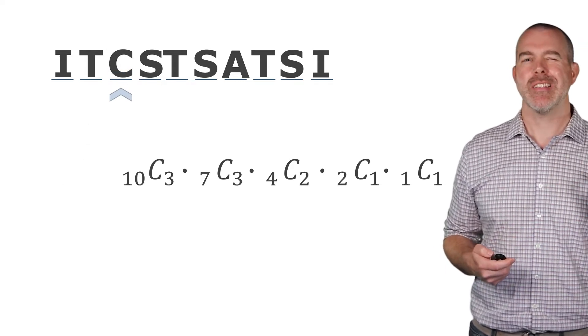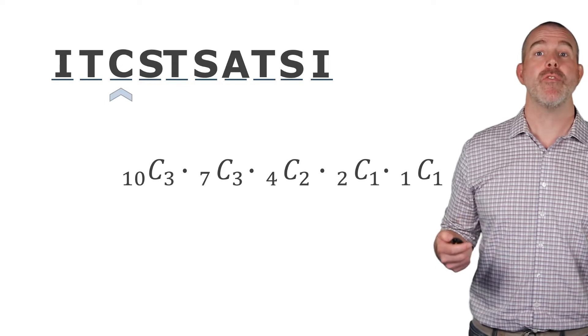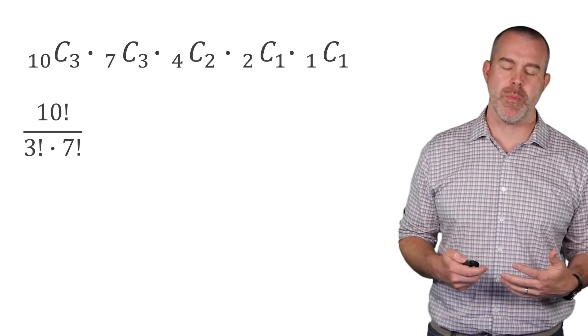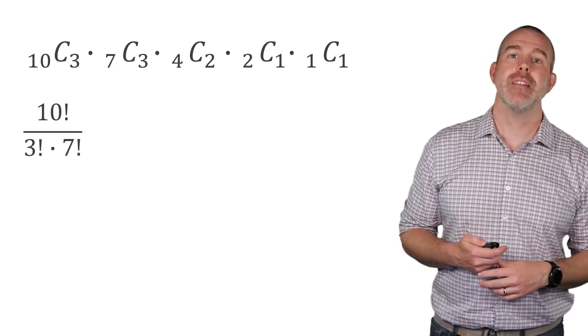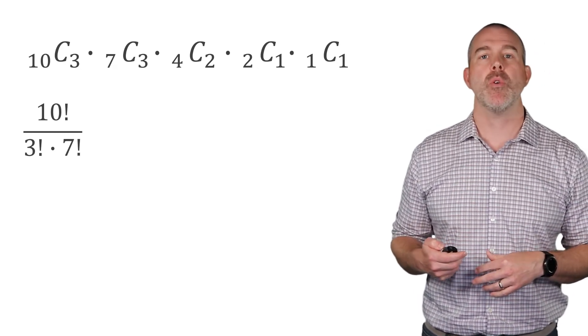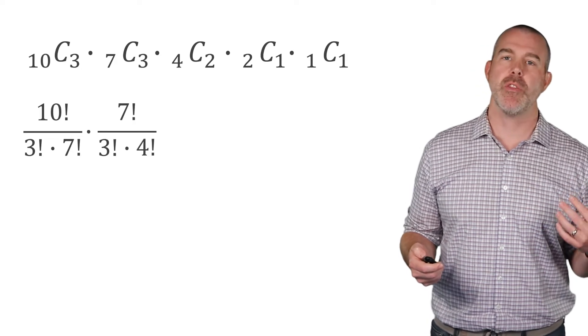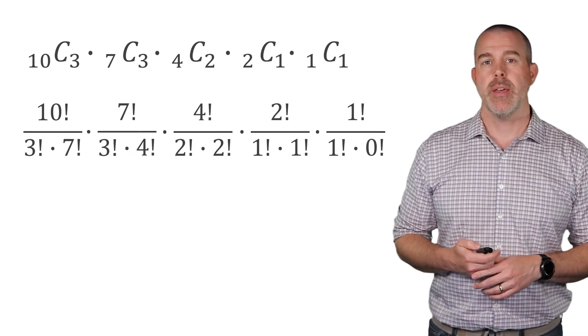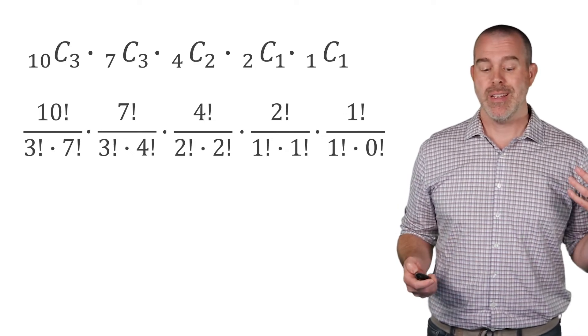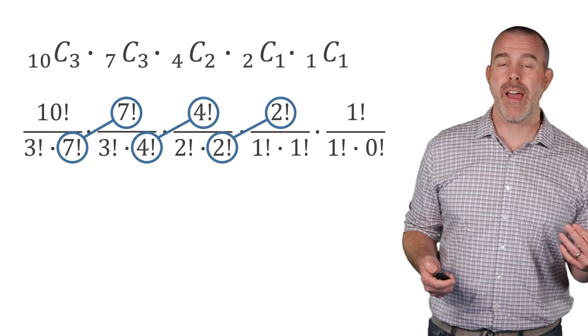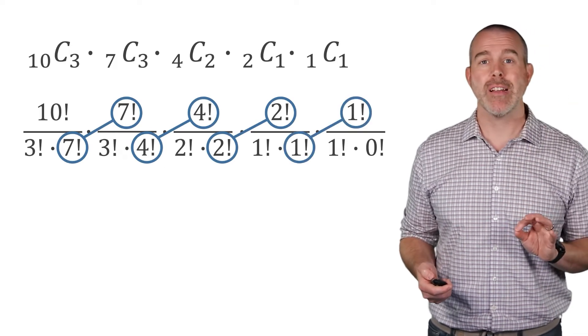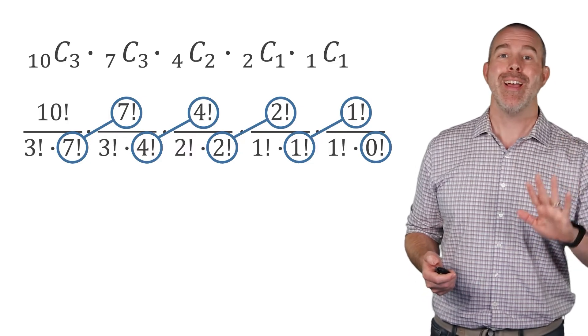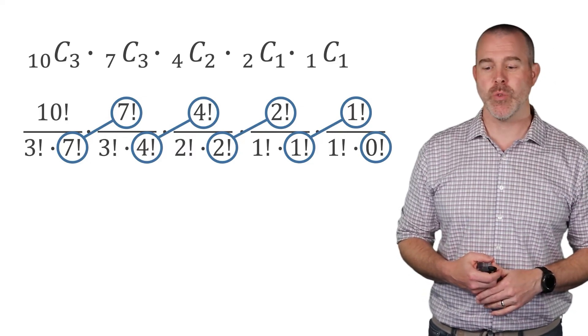We're going to try to use this kind of silly example to generalize a formula. So let's look at all these combinations, and let's write them all out using their formula. So 10C3, 10 factorial over 3 times 7 factorial. Similarly for 7C3, 4C2, 2C1, and then 1C1. There's a lot of simplifying here. 7 factorials, 4 factorials, 2 factorials, 1 factorials. In fact, 0 factorial is, by definition, 1. We're not going to get into the reason why, but that is a definition. 0 factorial is 1.